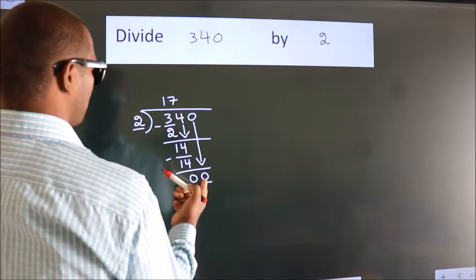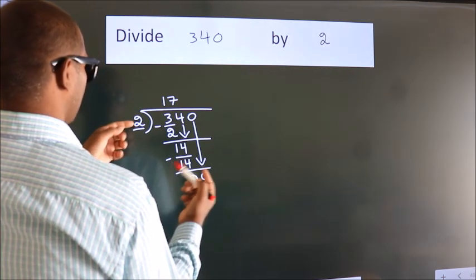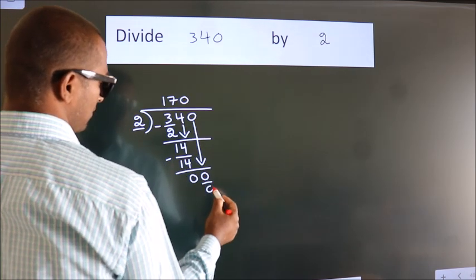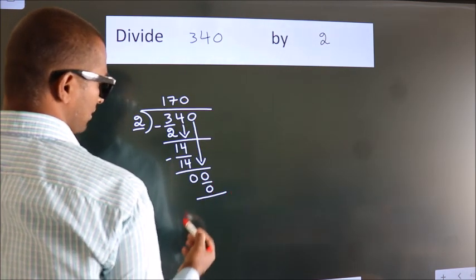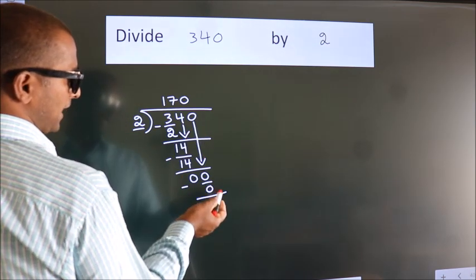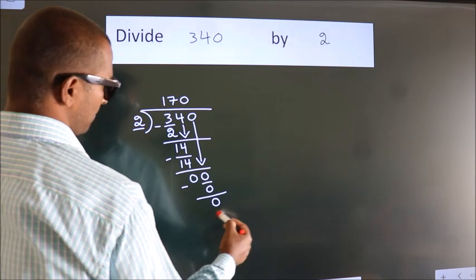When do we get 0? In 2 table. 2 times 0 is 0. Now, we subtract. We get 0. No more numbers to bring down. So, we stop here.